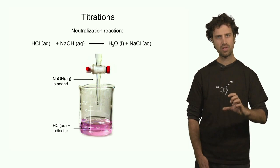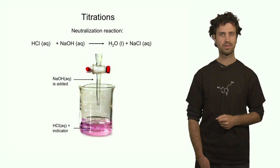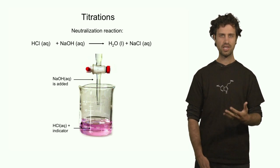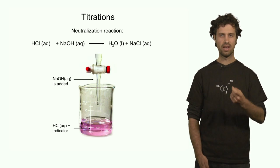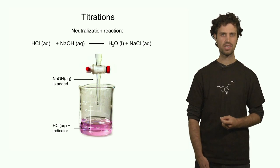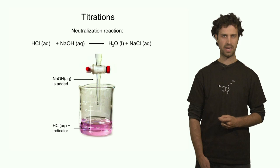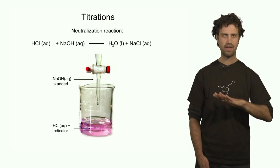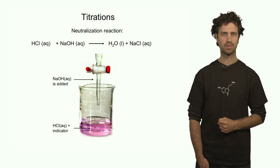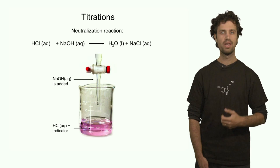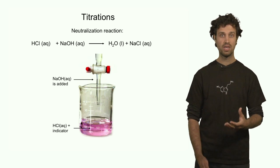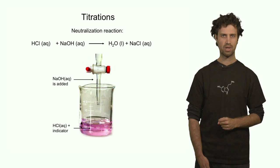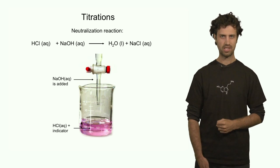We can also think of this reaction in the reverse order. We can start with a basic solution and then add an acidic solution. We add enough of the acid to take out all the OH⁻s in the original solution, effectively neutralizing the solution. So in this type of titration reaction, what we are trying to do is to balance the number of protons in solution with the number of OH⁻ in solution.